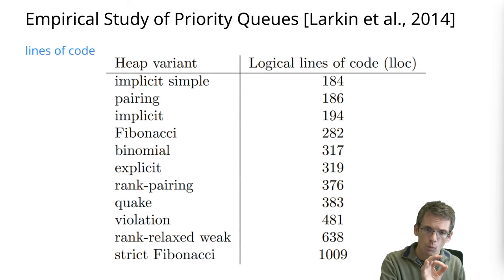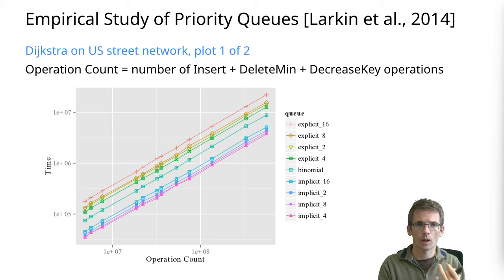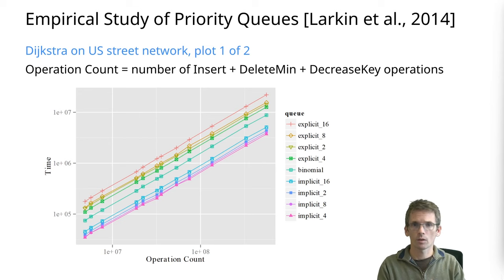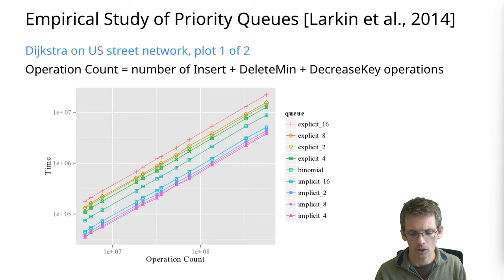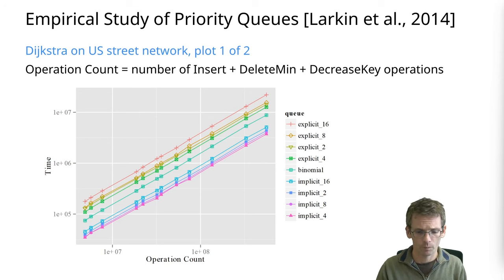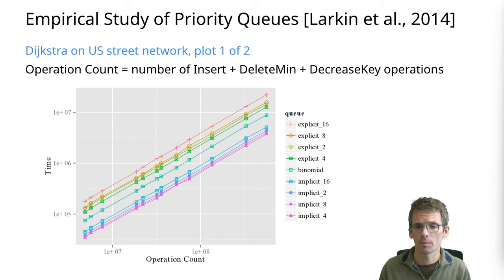Let's look at running time in the context of Dijkstra's algorithm on the US street network, counting the number of operations — insert, delete-min, decrease-key — completed in a given time. In the plot, the implicit representations and their explicit counterparts are shown alongside the binomial heap. The binomial heap is not that far off and compares better than the explicit representation. In this example, the four-ary heap works best.